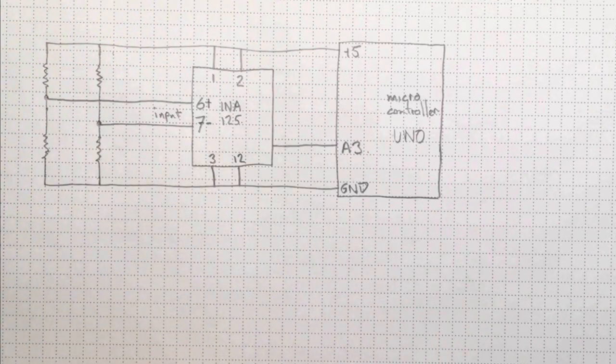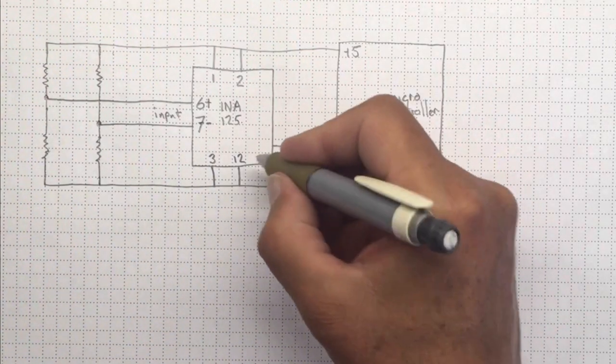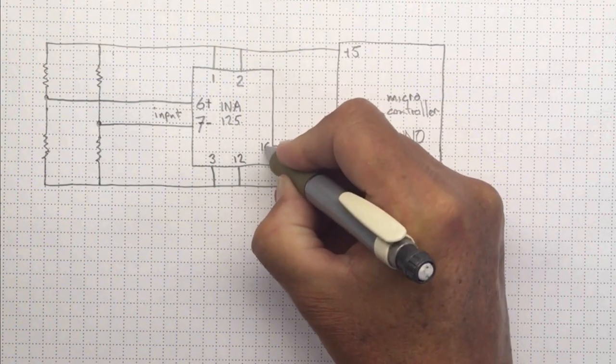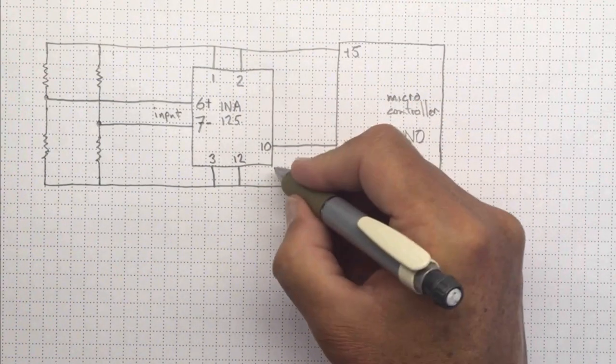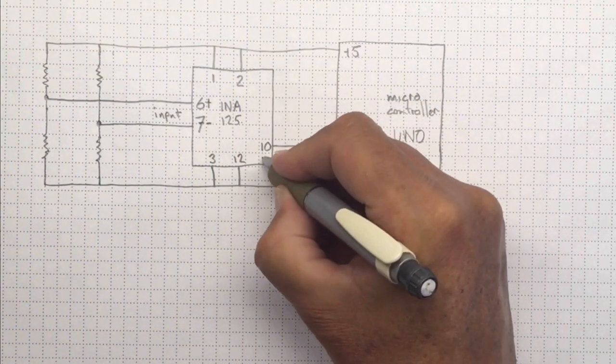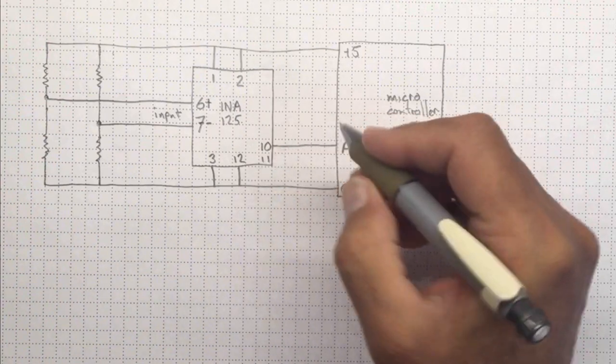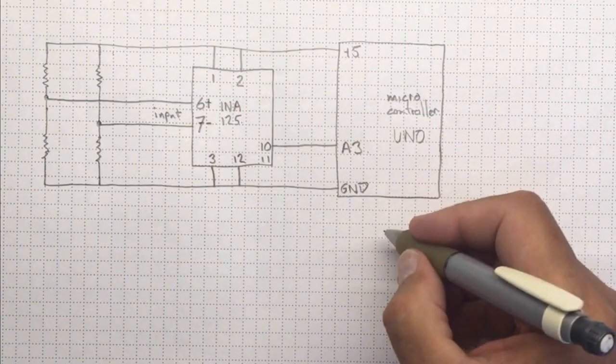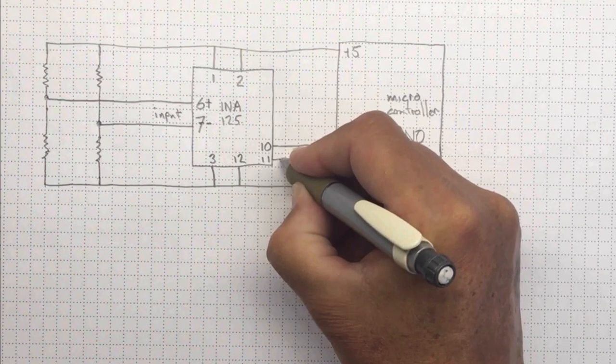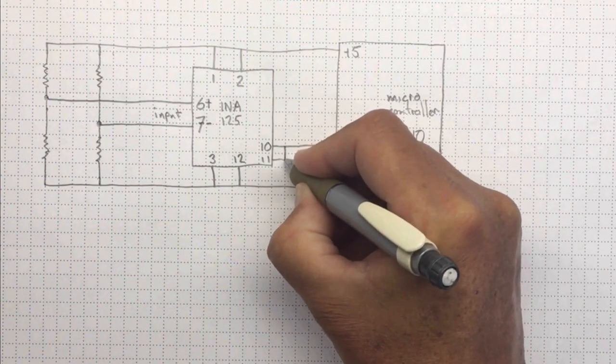Now, the output pin on the INA-125 is pin 10. But it also needs to be connected to pin 11 in order for the internals of the INA-125 to function. So we need to make that connection on our schematic.